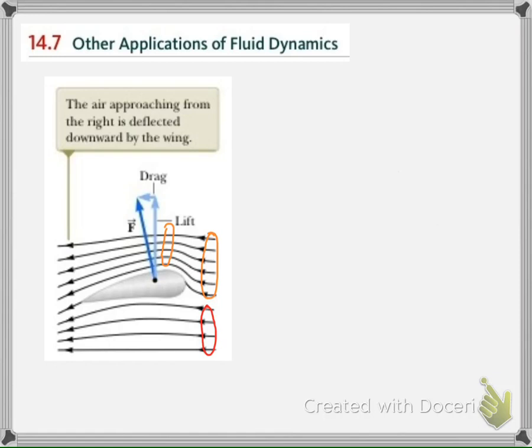We can see that in this figure: if the airplane moves in this direction, the air will move to the left. The air beneath the wing moves freely and the line of flow is approximately unchanged, while above the wing the line of flow is forced to come closer.